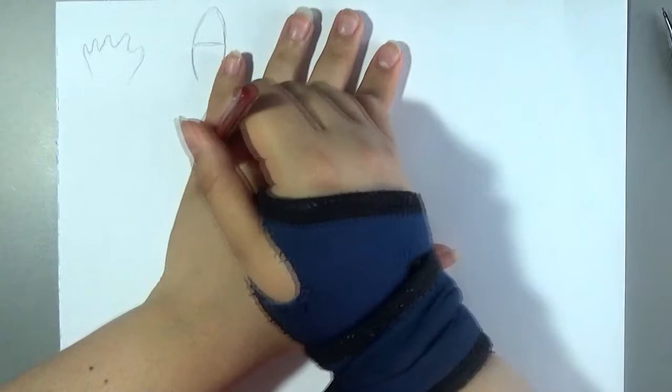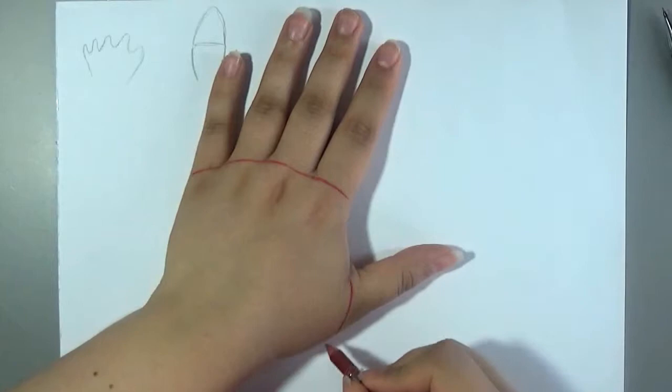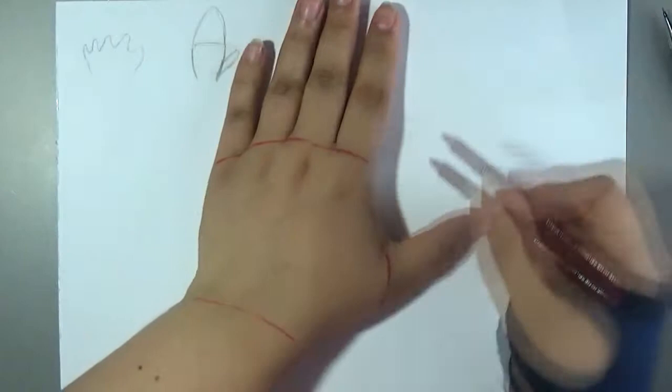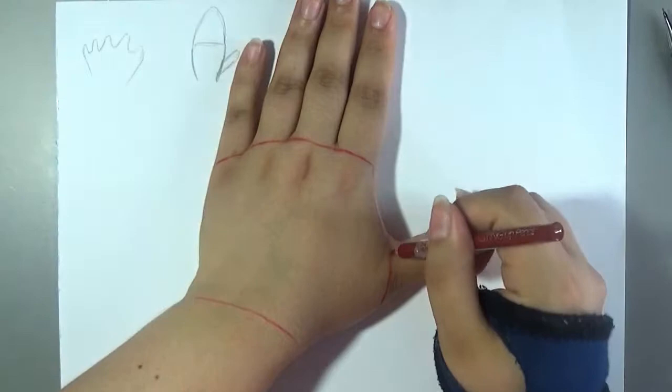So the first thing is the general shape. The general shape is kind of like this, but as you can see it won't go down like this but more like here. It's not just cut down, but it goes down to the thumb.